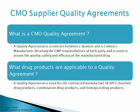What drug products are applicable to a quality agreement? It's used for the contract manufacture of APIs, finished drug products, combination drug products, and also biologicals.